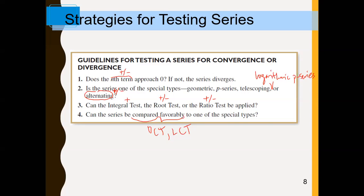With the LCT, you have to compute a limit and pick the appropriate comparison series, but most of the time that just amounts to ignoring stuff that isn't contributing all that much. So we have both the DCT and the LCT. The LCT can clean up just about any mess that's left. That's a good hierarchical scheme for how we would proceed through testing a series for convergence or divergence.